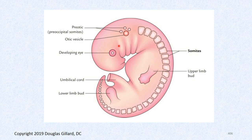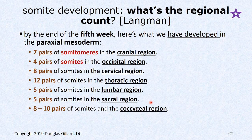As folding continues, you can see the little embryo is starting to look like a human — with an eye and arm buds forming. Most somites are forming as the embryo is folding. The regional count: seven pairs of somatomeres in the cranial region, four pairs of somites in the occipital region, eight pairs in the cervical region, 12 pairs in the thoracic region — matching the spinal nerve numbers — five lumbar, five sacral, and eight to ten pairs in the coccygeal region, which drops to three or four later.